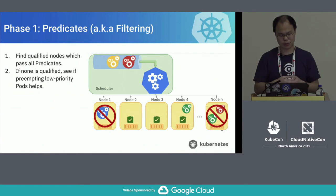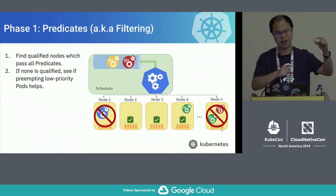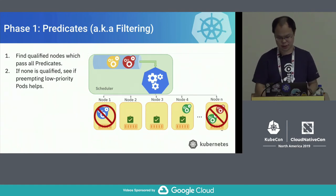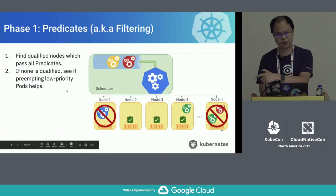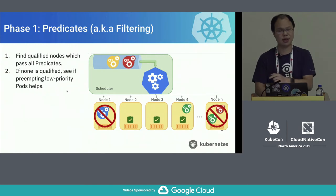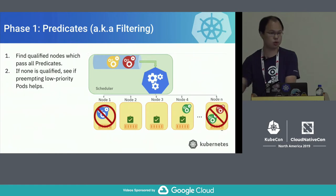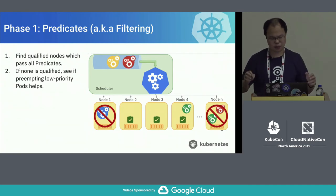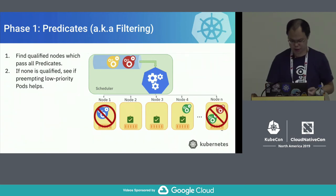If no node is qualified after filtering, the scheduler goes to a second path called preemption. For higher-priority pods, they have the chance to preempt lower-priority pods to make room. If it enters the preemption phase, the result is that it sets a spec called 'nominate node' on the target node and preempts the relevant pods. Then it goes to the next scheduling cycle, staying in a pending state so it can be better managed by the internal logic.